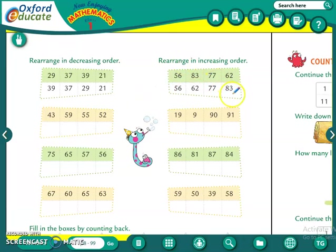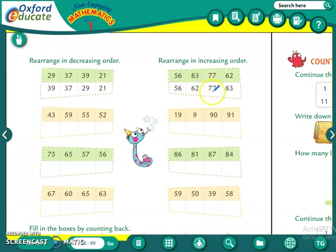Similarly, what is increasing order? Increasing order means smallest number to biggest number. We will write the smallest number first and the biggest number last. Out of these four, which is the smallest number? 56. Then which number is bigger than 56? 62. Then which is the next bigger number? 77. And which is the biggest number? 83. So this is increasing order.